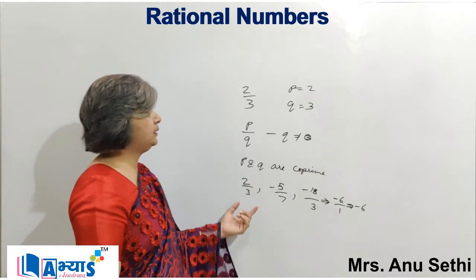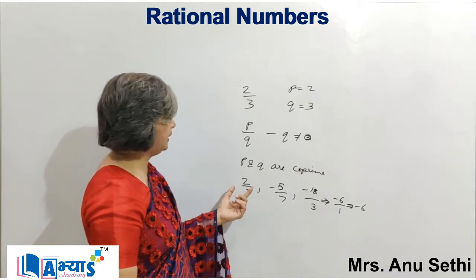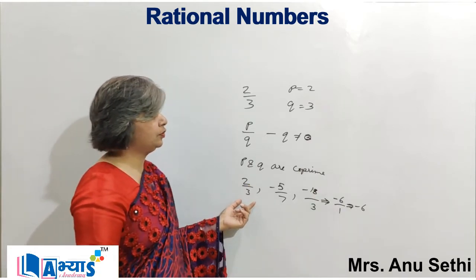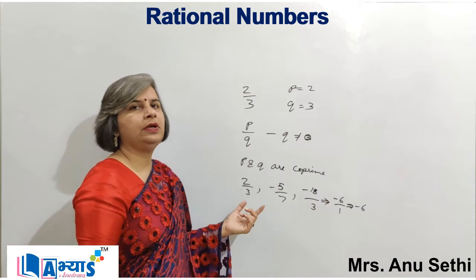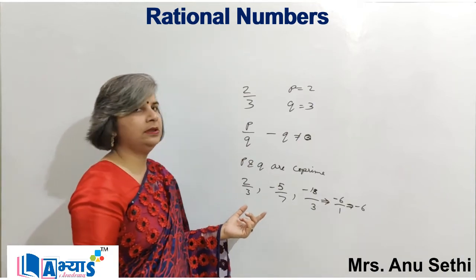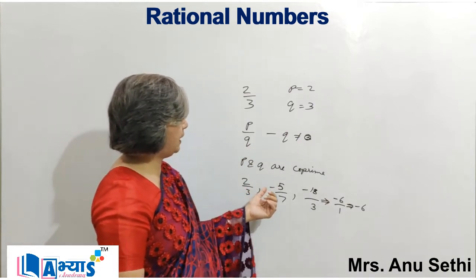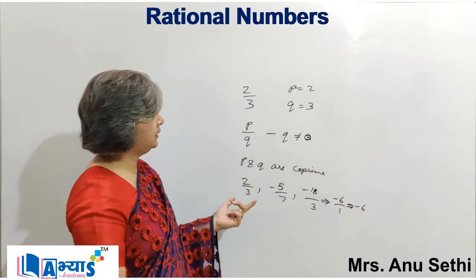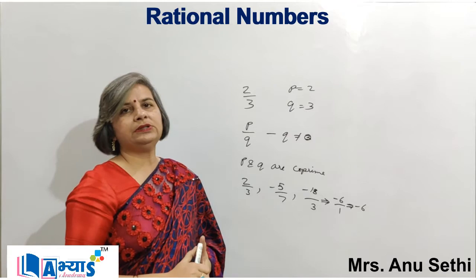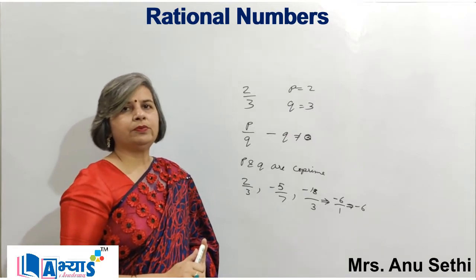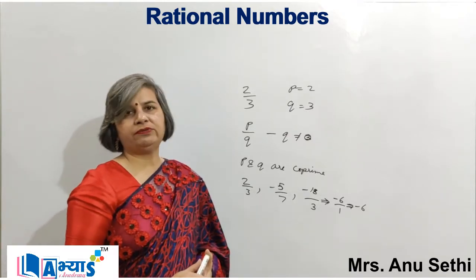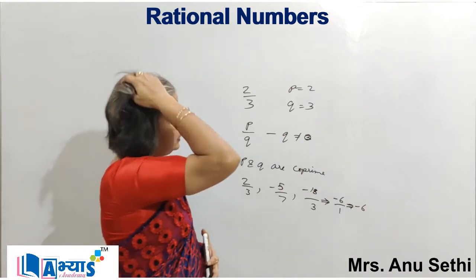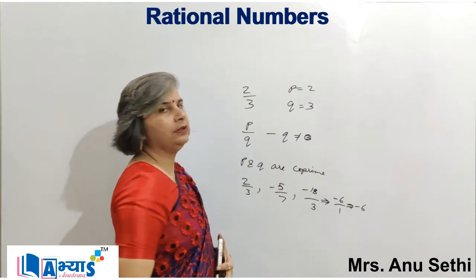For example, 2 by 3 is a rational number because 2 is an integer and 3 is also an integer, and 2 and 3 are co-prime, so 2 by 3 is a rational number in the simplest form. Similarly, minus 5 by 7 is a rational number because 5 is an integer and 7 is also an integer, and 5 and 7 are co-prime, so minus 5 by 7 is a rational number in the lowest form.